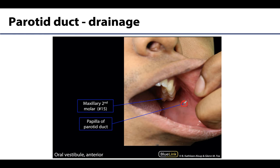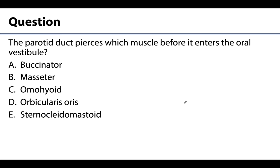That is the parotid gland and its parotid duct. Now for a question: The parotid duct pierces which muscle before it enters the oral vestibule? Is it A) the buccinator, B) masseter, C) omohyoid, D) orbicularis oris, or E) sternocleidomastoid? The correct answer is A, the buccinator — which, recall, is in the cheek region. The parotid duct dives through this muscle to enter the oral vestibule region, allowing saliva to reach that area.